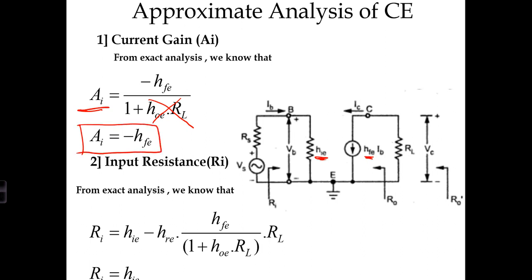Second is input resistance. From exact analysis, we know RI equals HIE minus HRE times HFE divided by 1 plus HOE times RL, multiplied by RL. In approximate analysis, we discard HRE, so RI becomes simply HIE. As this is common emitter, we use suffix E. Manufacturers give values in terms of E only: HFE, HIE, because common emitter is the most popular configuration.